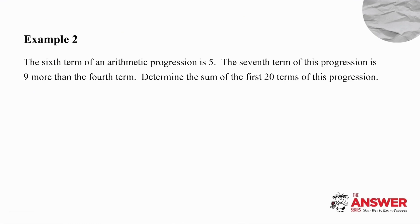Example 2, we are given information that we need to process before we start the question. So the 6th term is 5. The 7th term is 9 more than the 4th term. That's an unusual way to give the information. The sum of the first 20 terms is what we have to determine. Okay, think about the information. Pause the video and try the question on your own.